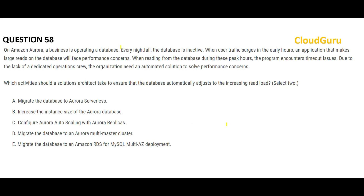In a nutshell, this question says there is a performance issue when we try to read the database — we see timeout issues. We need an automated solution, meaning no manpower will be available to fix the issue when it happens. We need to select two answers. When I look through the options I see Aurora, and that should be part of the answer. Option E recommends RDS Multi-AZ deployment — but Multi-AZ is used when you need a disaster recovery solution, not a scalability solution.